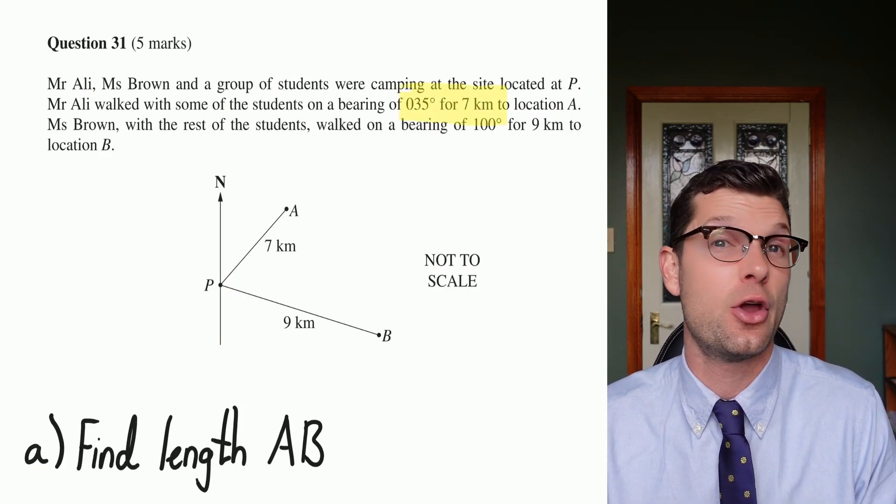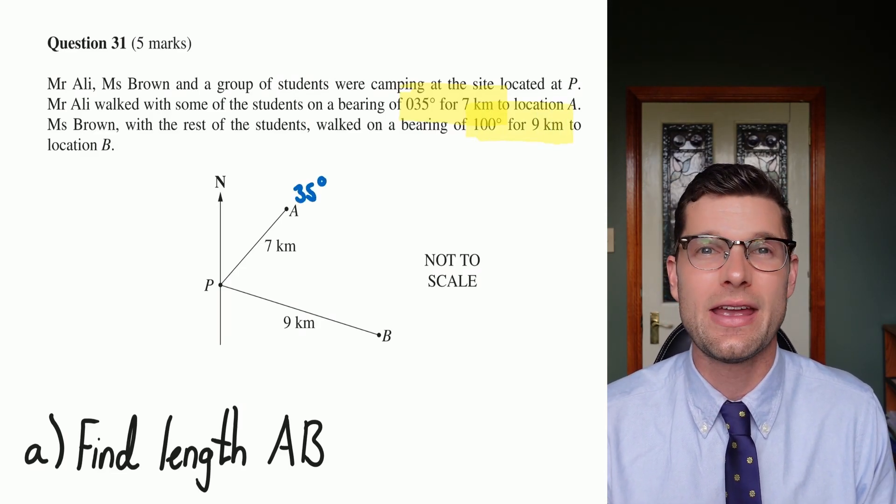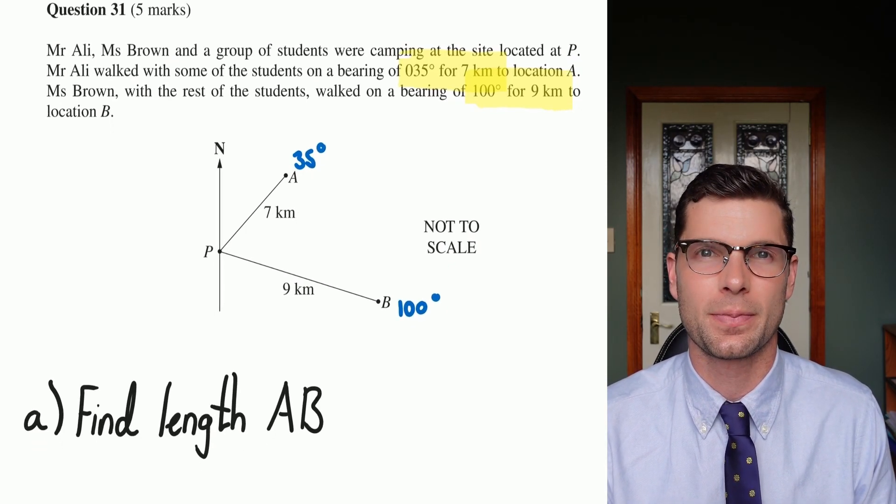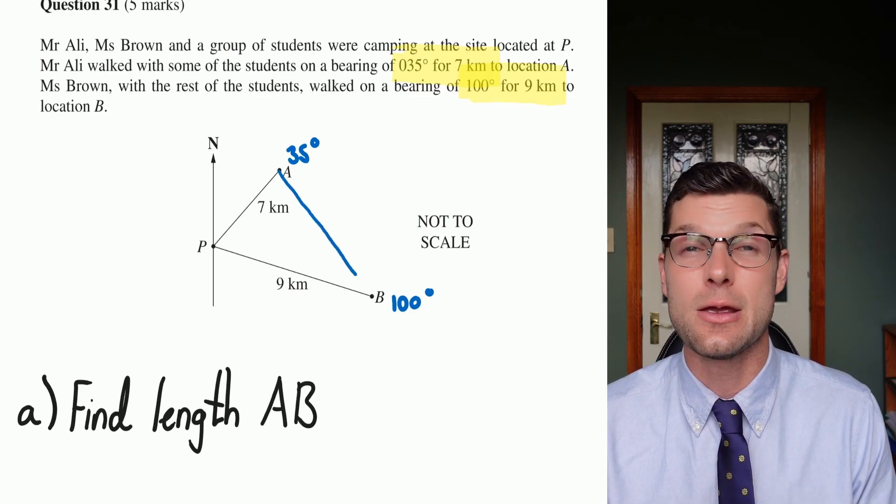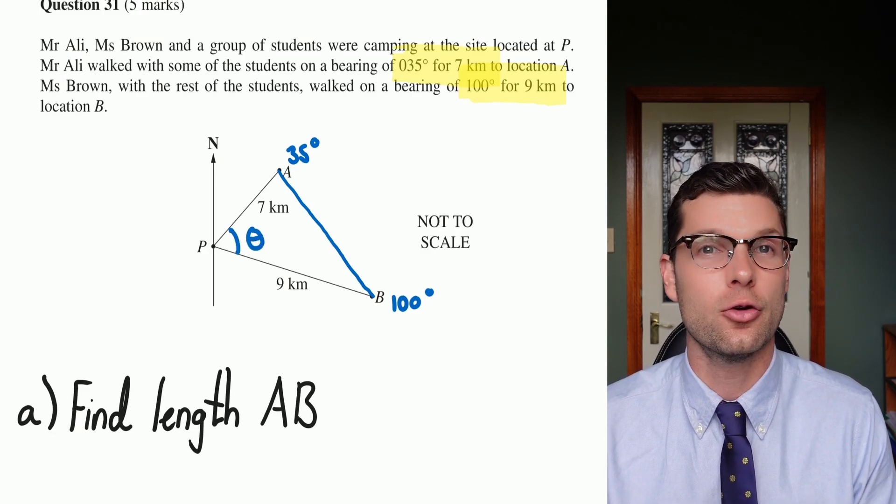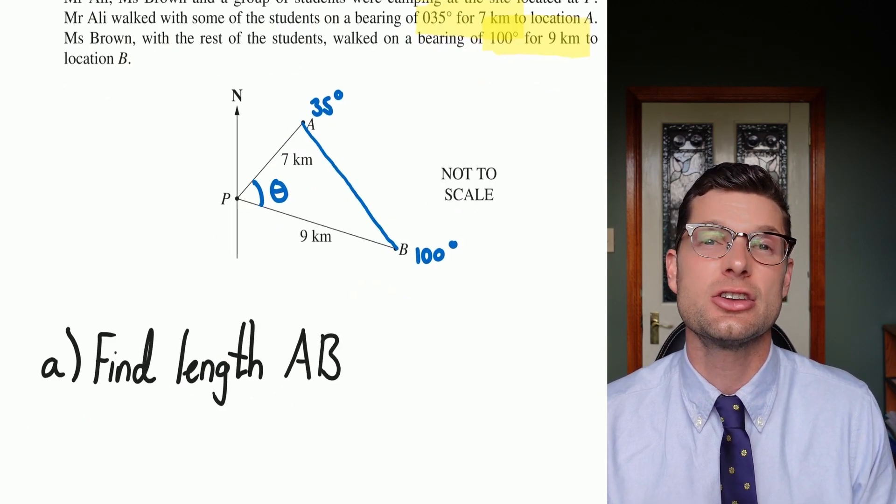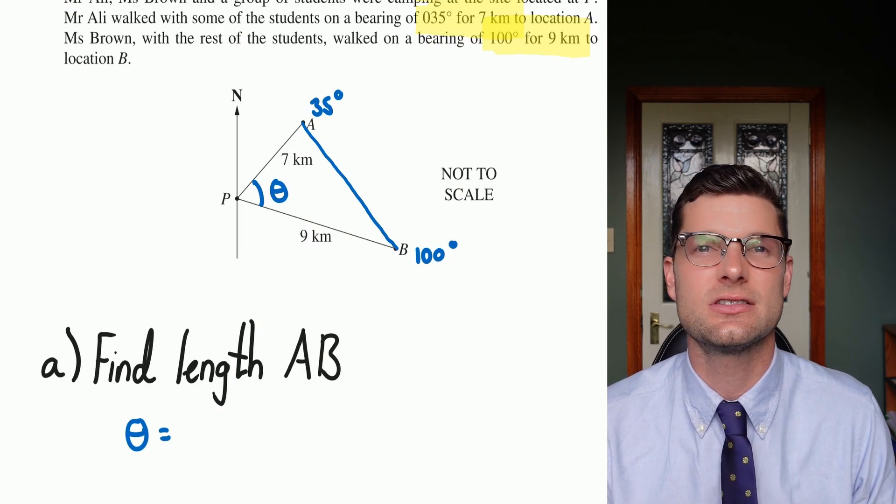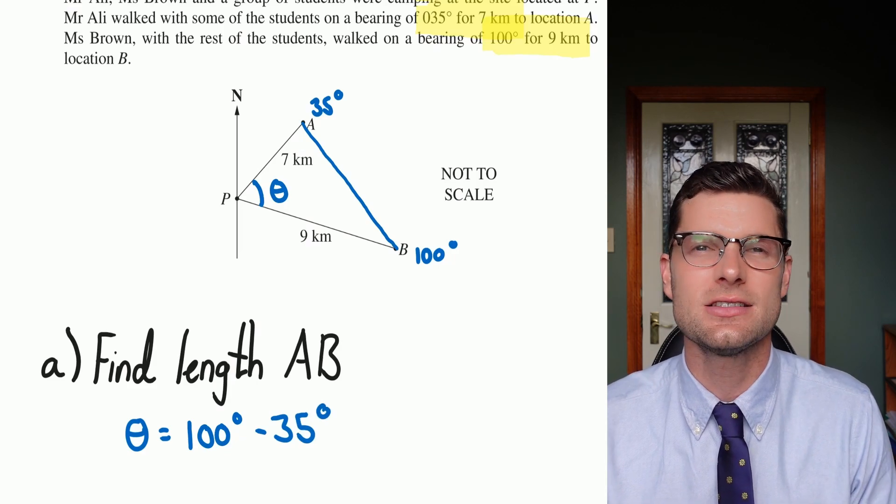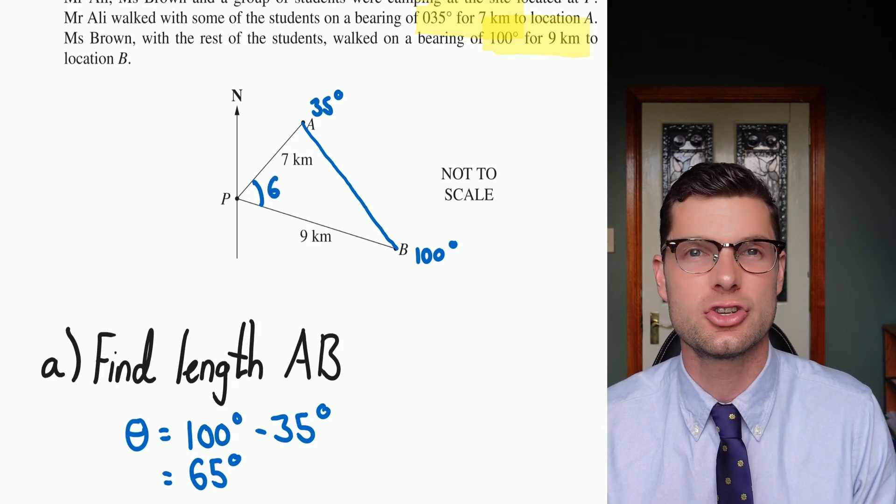For this one, group A has walked seven kilometers at 35 degrees, so I'm going to throw that 35 degrees in immediately. Group B has gone nine kilometers at 100 degrees, so I'm going to put that one in as well. What we've got to try and do here is find length AB, which is exactly the same process that we did before. We are going to have to find that origin angle first, in order to start using all these other side lengths that we've been given. Because 35 degrees up and 100 degrees is over there, we just have to find the difference between those two numbers. Difference means minus, so we go 100 minus 35 equals 65 degrees, and I'm going to put that in straight away.